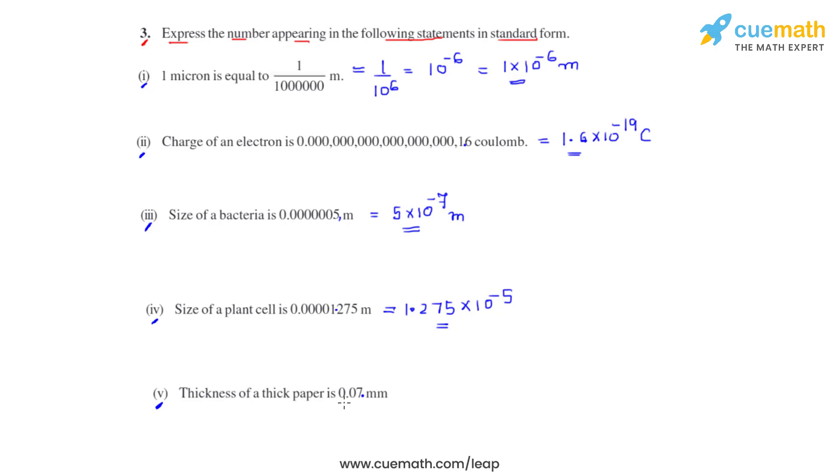It is to be moved by two places towards right. So our answer would be 7 times 10 raised to negative 2 millimeters, and this is the thickness of a thick paper. This is how we solve this problem.